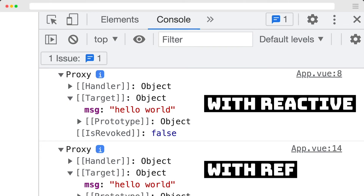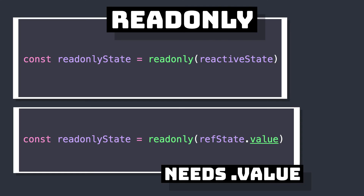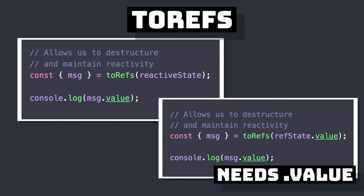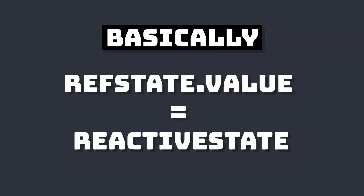Since these are both proxies, we can call a lot of the Vue helper methods such as read only, which returns a read only proxy, to refs to convert our object into multiple reactive refs, and anything that we would do to our normal reactive object.